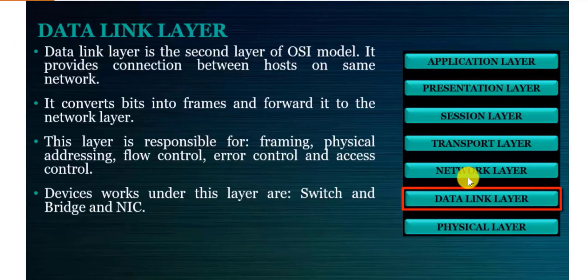The Data Link layer is the second layer of the OSI. It provides connection between hosts on the same network — the Data Link layer has no ability to provide communication between hosts on different networks. Hosts here refers to any device connected to your network and given an IP address, such as mobile phones, laptops, desktops, servers, and printers. Data flowing through the network at this layer is converted into frames before being forwarded to the Network layer.